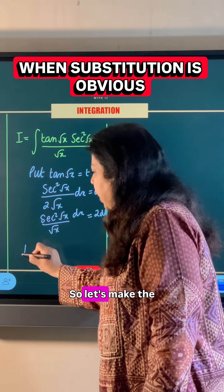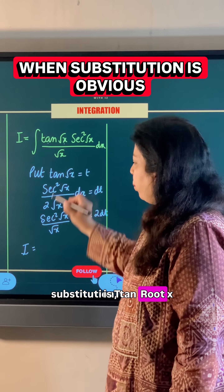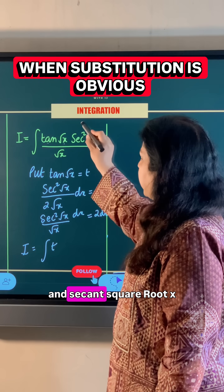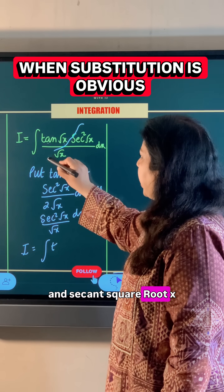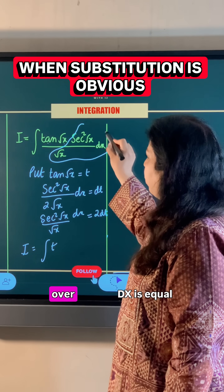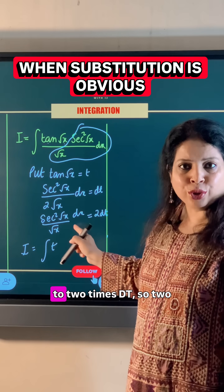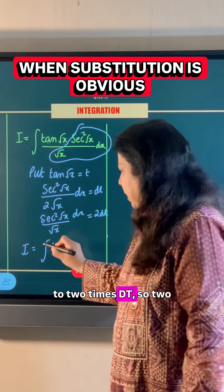So let's make the substitution: tan(√x) = t, and sec²(√x) / √x · dx = 2 dt.